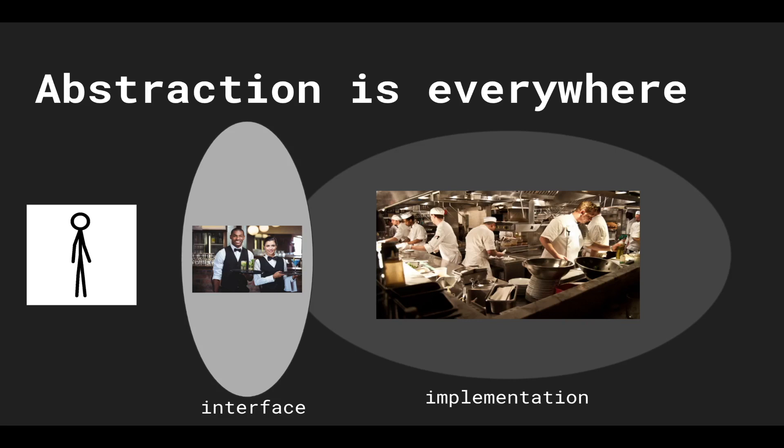I don't really care how the chefs cook it. I just want to say, hey, I want a salmon, right? So the waiters and waitresses are the interface to the kitchen, and the kitchen is the implementation. So the waiters and waitresses are an abstraction. Abstraction and interface can be used interchangeably, and the waiters and waitresses are an abstraction over the kitchen.